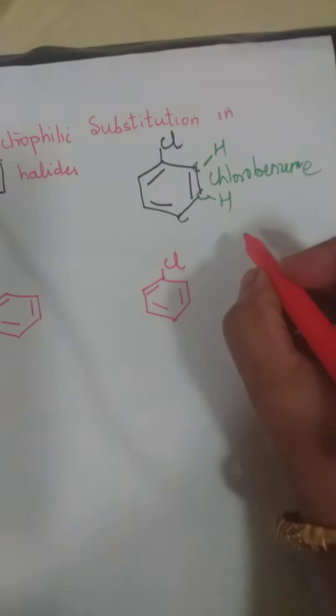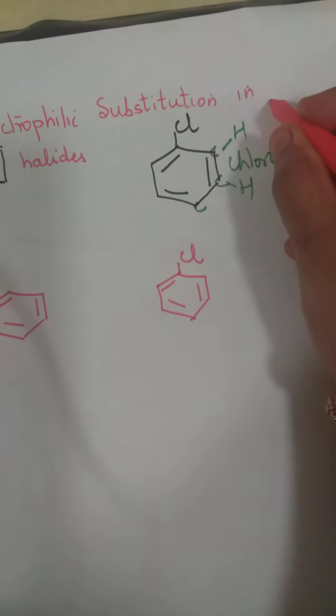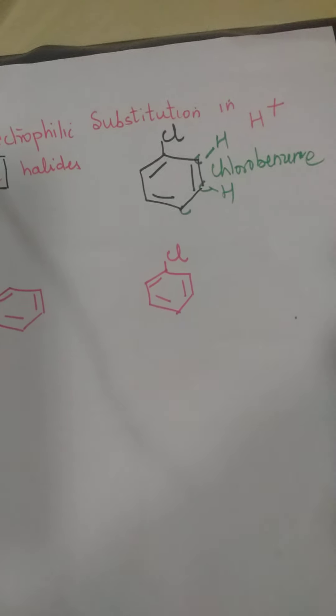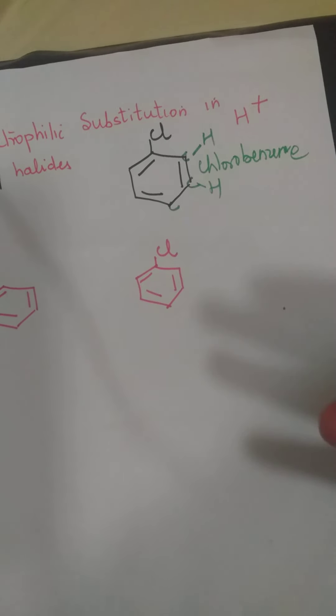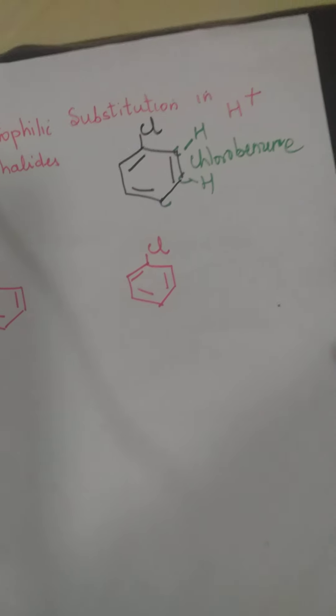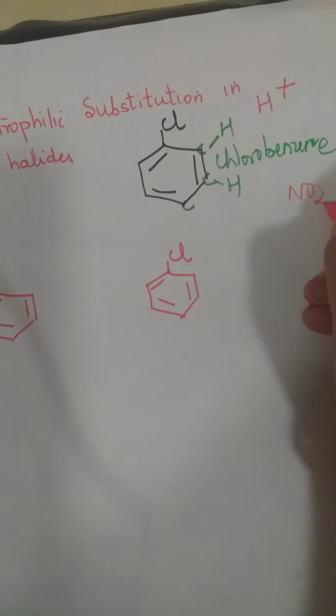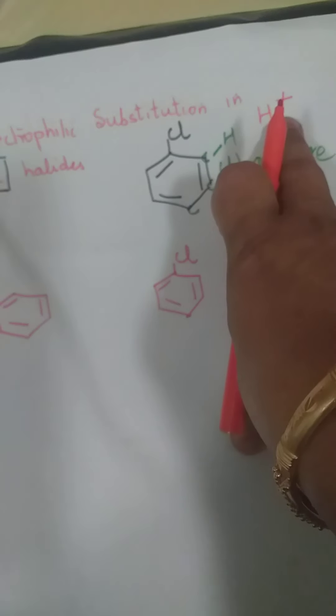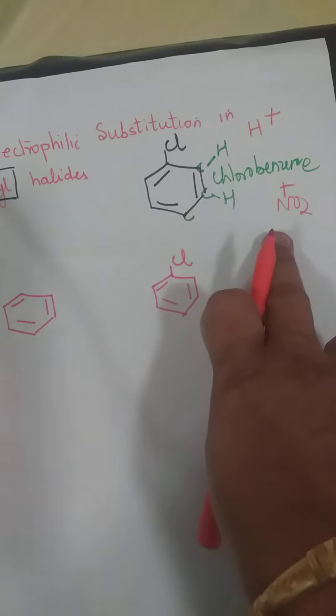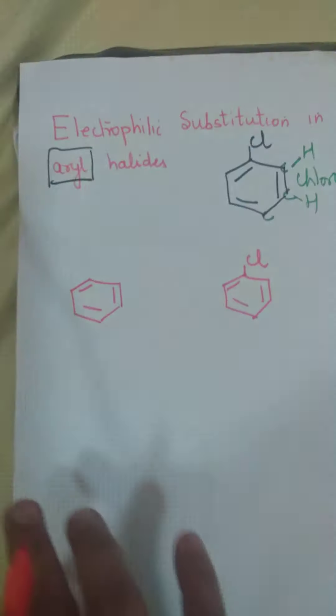Ab, electrophilic substitution jab hum bolte hai, what we need to remember is, yeh jo hydrogen hai, har carbon ke upar. Yeh hydrogen nikalta hai as H plus. Plus charge dekha, toh electrophile hai. H plus ban ke nikalta hai. Yaani, ek electrophile nikal raha hai. Aur, uske jagah mein koi aur electrophile chahiye, toh aap NO2 bol do as NO2 plus. Yeh bhi electrophile hua. Toh, ek electrophile H plus, jo yahan se nikalega, is substituted or replaced by another electrophile. So, you call it as electrophilic substitution.